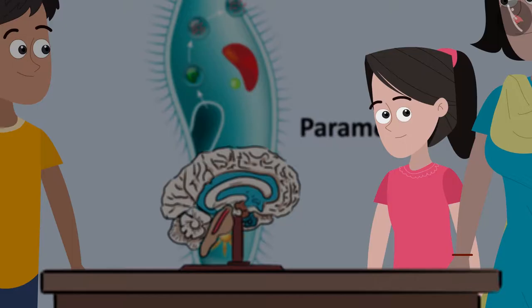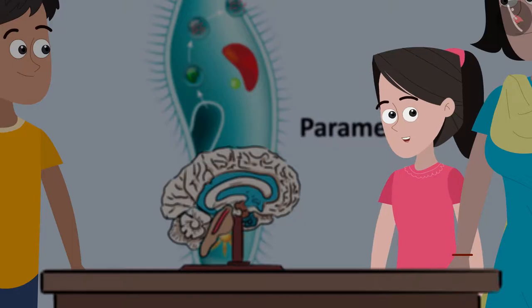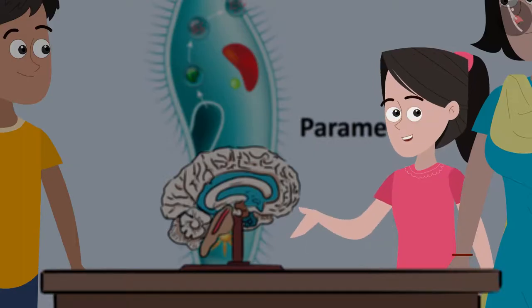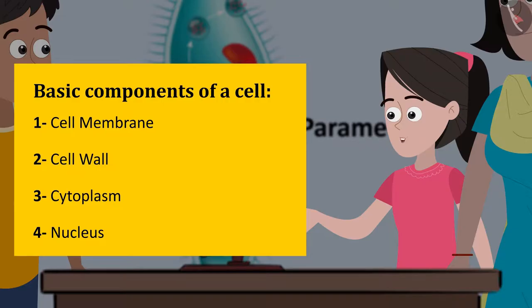Friends, you just listed out the components that are present in the plant and in animal cells. Can you refer to page number 93 to 96 of your textbooks and list out the functions of the following? The basic components of a cell are: cell membrane, cell wall, cytoplasm, nucleus.